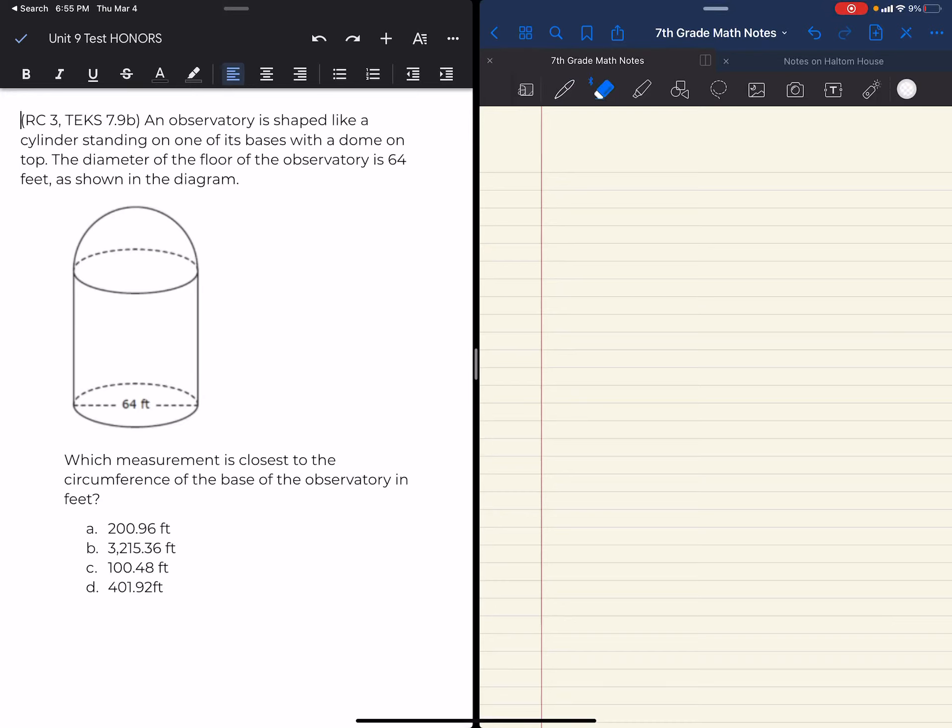All right amazing mathematicians, let's get into it. On the left side you see the question and on the right side you'll see me working it out as if I were a student. An observatory is shaped like a cylinder standing on one of its bases with a dome on the top. The diameter of the floor of the observatory is 64 feet as shown in the diagram. Which measurement is closest to the circumference of the base of the observatory in feet?